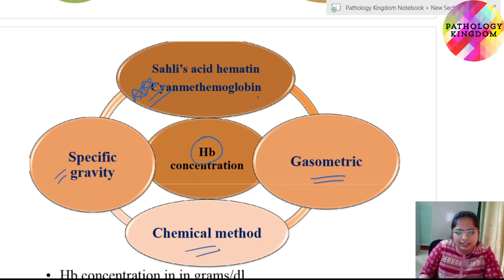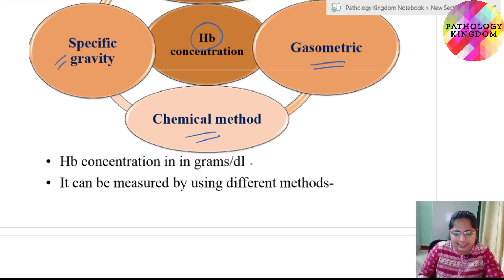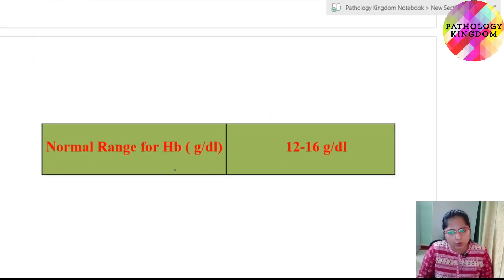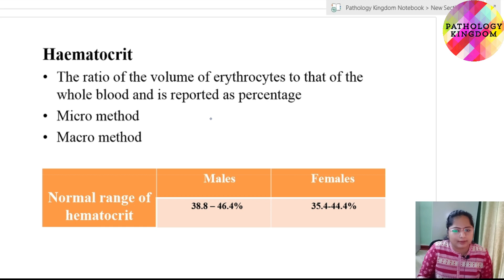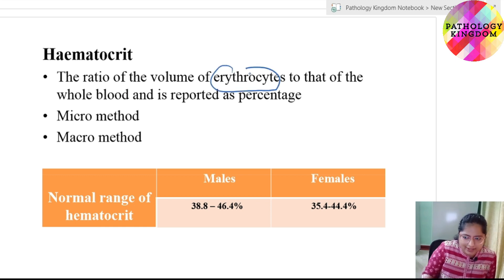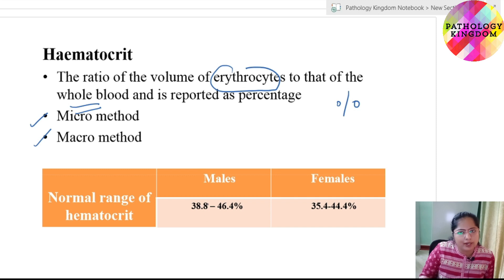The standard method for measuring hemoglobin gives concentration in gram per deciliter. The normal range for hemoglobin is approximately 12 to 16 gram per deciliter. Hematocrit is the ratio of volume of erythrocytes to that of whole blood and is reported as a percentage. It can be measured by micro method or macro method. The normal range of hematocrit in males is approximately 38.8 to 46.4%, and in females it is 35.4 to 44.4%.